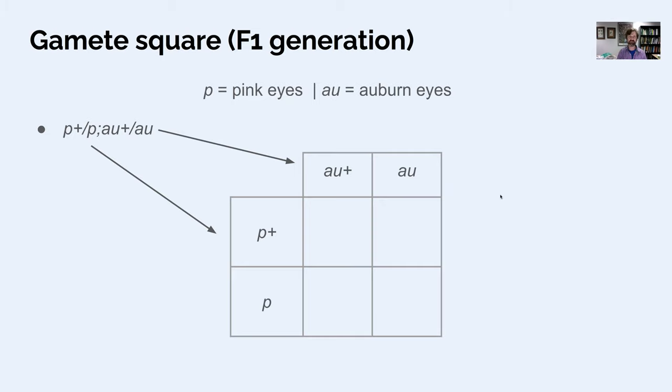And then those become the top row and the left side of your Punnett square. And combining all these together gets you 16 possible genotypes for your outcomes. You'd be able to figure out the numbers of each genotype, the frequencies of each genotype, and also the frequencies of each phenotype.